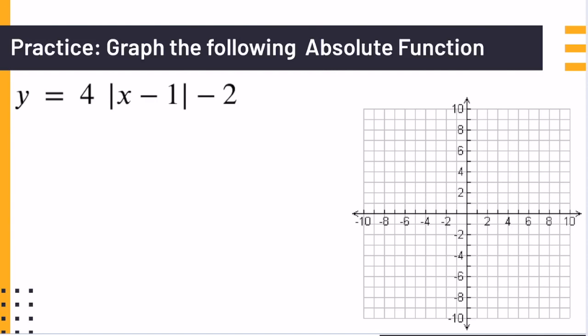Our practice problem that we are going to go over in this video is y equals 4 times the absolute value of x minus 1 minus 2. Notice that the a is 4. Because it's 4, we know this is greater than 1, so this is going to be a very narrow graph. We know that h and k is 1 and negative 2, so our vertex is 1 and negative 2.